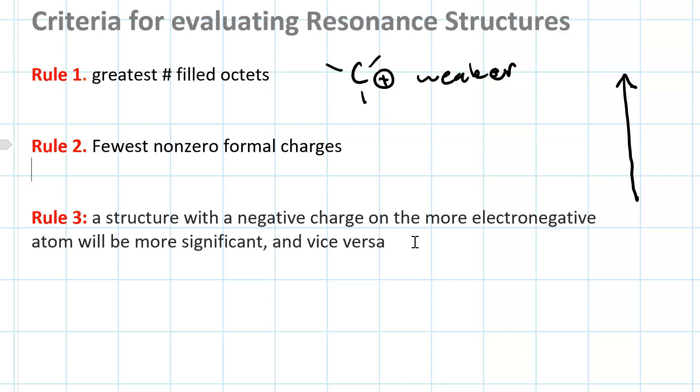Now, you might think it's better to put a positive formal charge on the less electronegative atom. That is also true, except in the case of carbon, because carbon has a sub-octet.